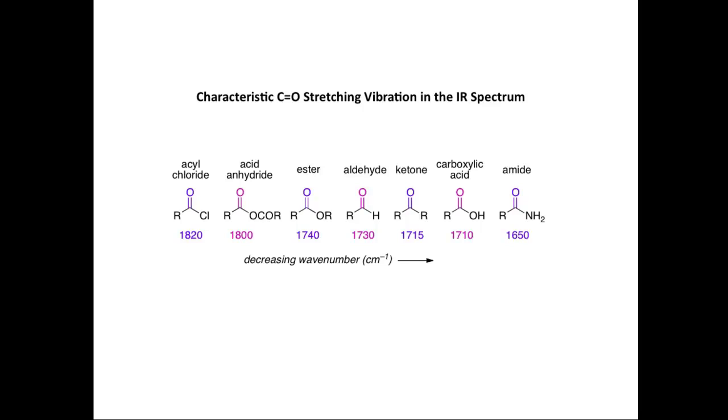As you can see from this sequence of carbonyl-containing functional groups, each functional group has a characteristic CO stretching vibration. For example, in the acyl chloride, we have a stretching vibration around 1820 for the CO bond. Moving through to the acid anhydride at 1800, lower for the ester, the aldehyde, the ketone, the carboxylic acid, and last but not least, we have the aldehyde at around 1650. We can use the CO stretching vibration, the position of the absorption band in the infrared spectrum, to identify the particular carbonyl functional group.